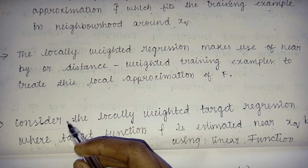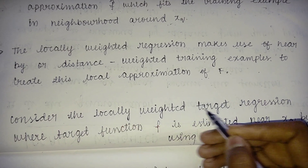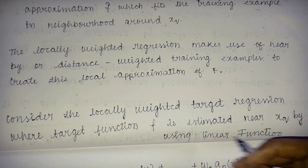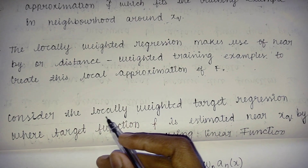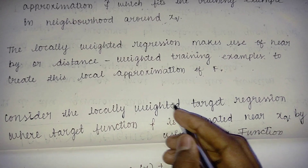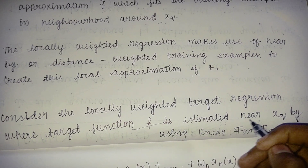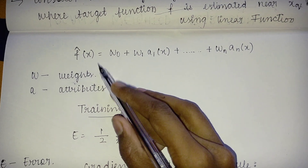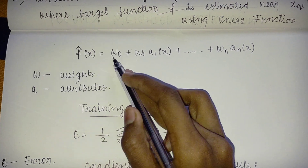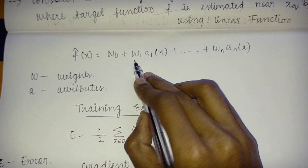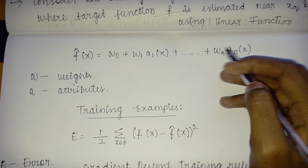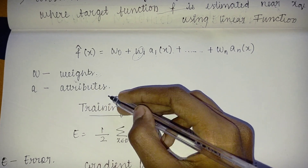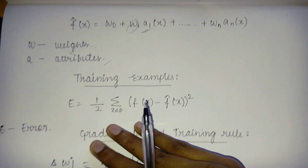We consider locally weighted target regression where the target function f is estimated near xq by using a linear function. The equation to remember is: f̂(x) = w0 + w1·a1(x) + ... + wn·an(x), where w refers to weights and a refers to attributes.